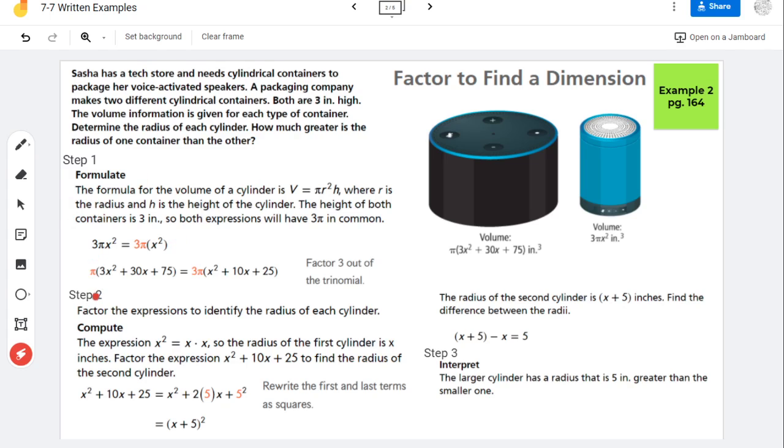Now in step two, they're factoring the expressions to get the radius. Because we have the height and the pi, that means that this stuff left in black is your radius squared. Now on the smaller container, it's easy to see that x is the radius because that's what's being squared.